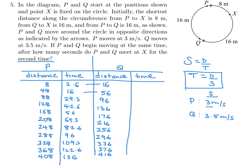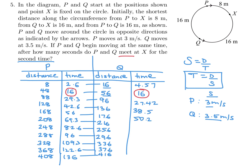Let me make sure I align them properly. For Q, the times use distance divided by 3.5. So 16 divided by 3.5 is 4.57, and 56 divided by 3.5 is 16 — that's the first time they meet. I need to find the next time the times are equal. Continuing: 38.5, 50.2, 61.7, 73.1, 84.5, 96 — and that 96 matches the value on P's side.